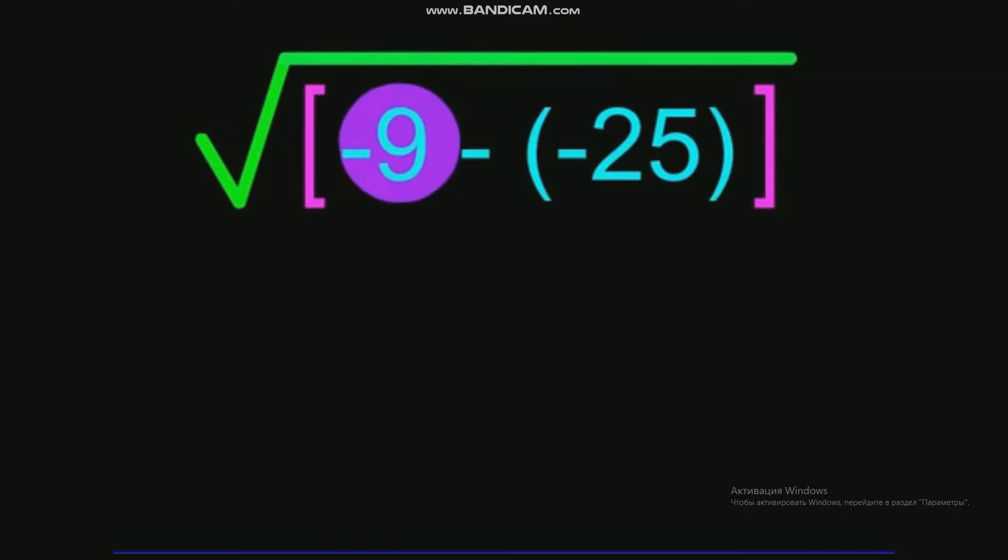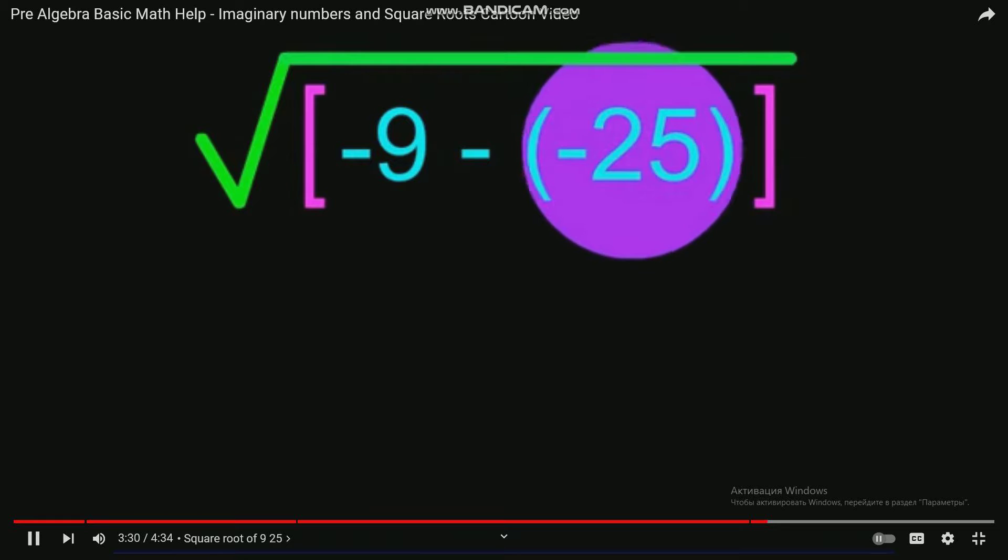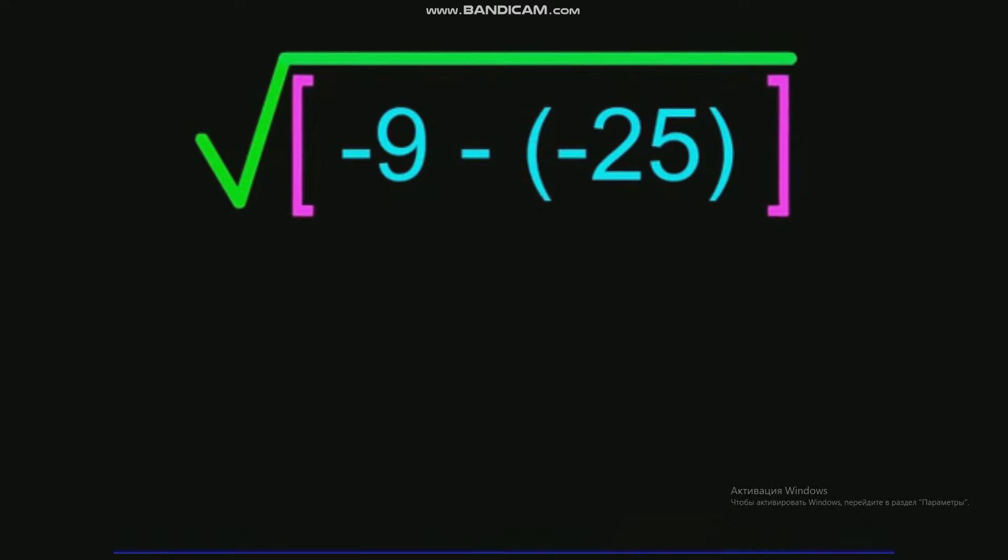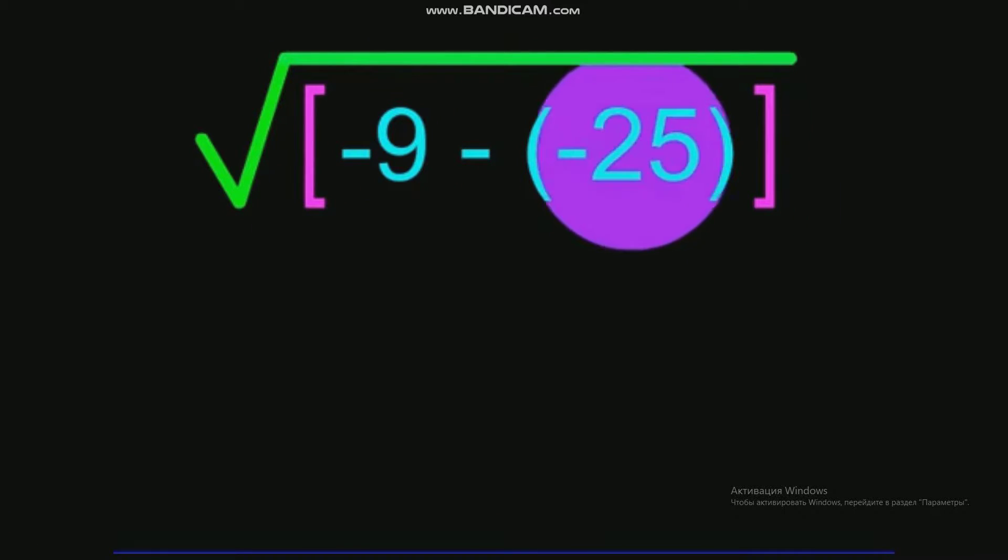Suppose we had the square root of negative 9 minus a negative 25. This time we see brackets surrounding negative 9 and negative 25.